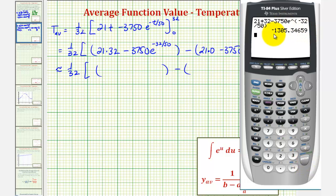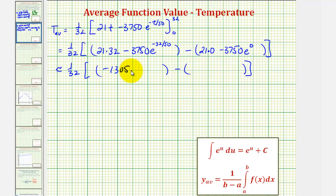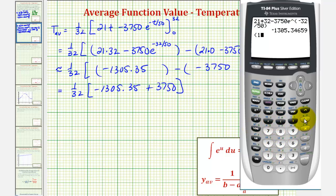Rounding to two decimal places, this would be approximately negative 1,305.35. And then over here, this would be zero. E to the zero is equal to one, so we'd have negative 3,750. So we'd have negative 1,305.35. This becomes plus 3,750. So we have one divided by 32 and then times negative 1,305.35 plus 3,750. Rounding to one decimal place, the average temperature would be approximately 76.4 degrees Celsius.